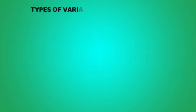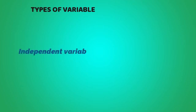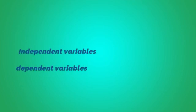Now let us proceed to the different types of variables. Number 1 is independent variable. Second, dependent variable. And number 3, control variable.